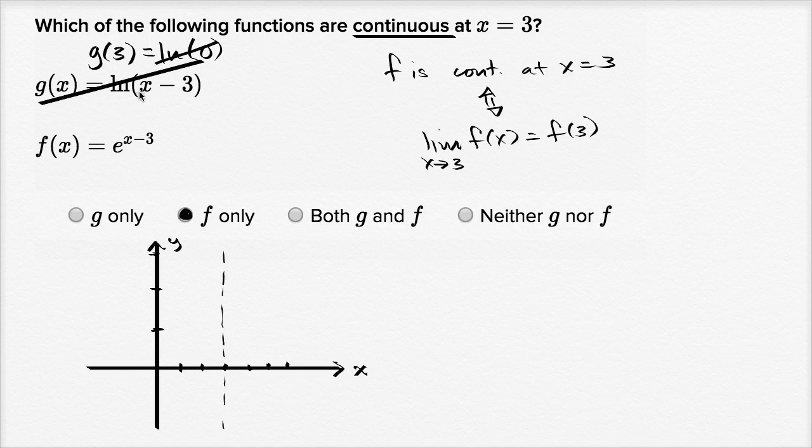So g of x, ln of x minus three, is gonna look something like this. If you put three in it, it's not defined. If you put four in it, ln of four minus three is, actually let me just draw a table here.